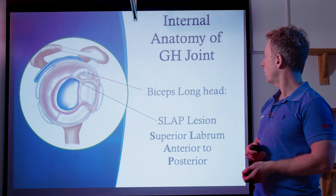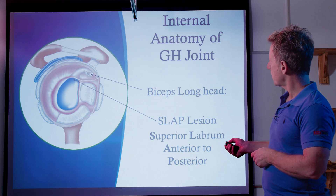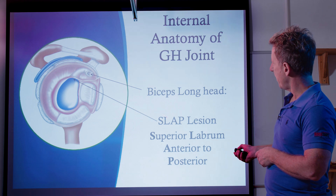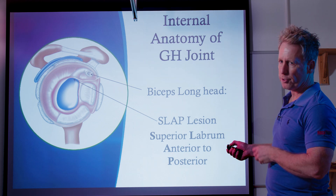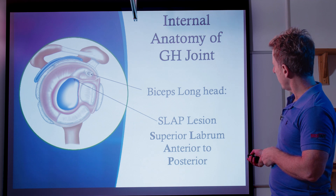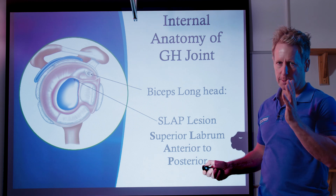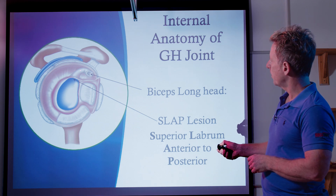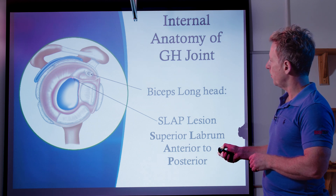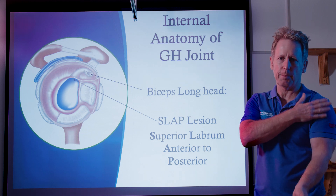A little about the anatomy inside the glenohumeral joint. You can see where the bicep long head attaches to the supraglenoid tubercle. If it tears around there, there are actually four grades, and they call it a SLAP lesion — superior labrum anterior to posterior. Grade two is the most common, where the tendon attaches to the labrum, which becomes torn. The pain is deep in the shoulder, and a Speed's test might help identify it.